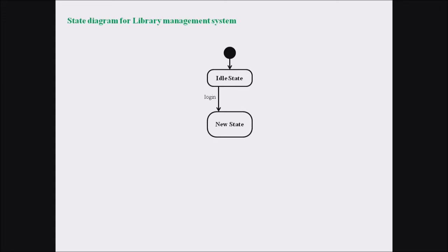From the idle state we are moving to a new state, with the transition labeled as login. By logging into the system, we move from the idle state into a new state. After completion of different actions, we can also move back to the idle state through a transition known as logout. Transitions are represented by arrows, and the transition processes are labeled beside the arrows.